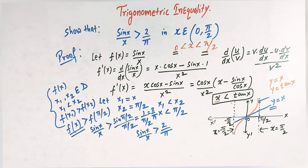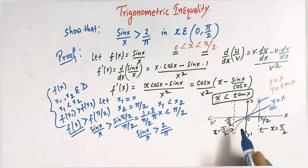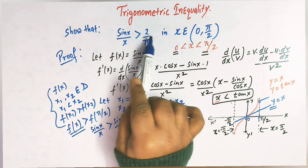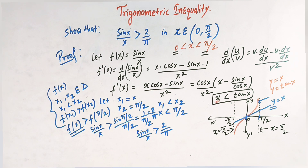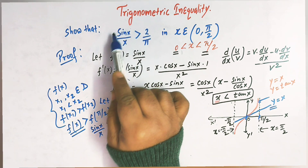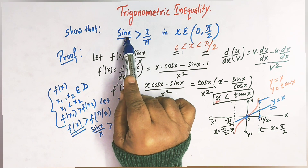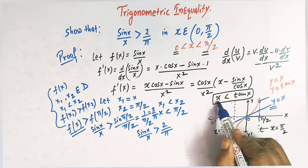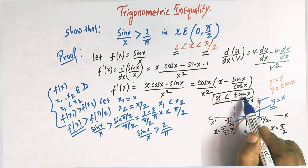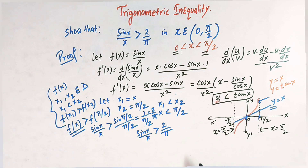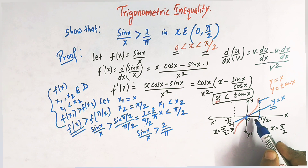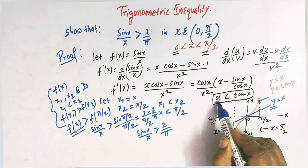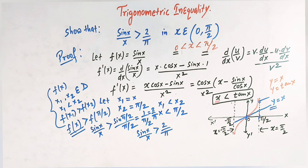So viewers, this is how by making use of the concept of decreasing functions and some trigonometry, we can prove this important trigonometric inequality. Always remember that in proving this inequality sin x over x is greater than 2 by pi, we also proved the important inequality x is less than tan x when x belongs to the interval 0 to pi by 2, shown with the help of a graph. We can also prove this inequality by making use of the Lagrange mean value theorem.